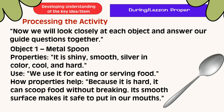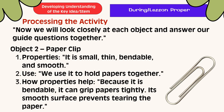Let's process the activity. We will look closely at each object and answer our guide questions together. For object number one, the metal spoon — properties: it is shiny, smooth, silver in color, cool, and hard. We can use it for eating or serving food. Because it is hard, it can scoop food without breaking. Its smooth surface makes it safe to put in our mouth. For object number two, a paper clip — properties: it is small, bendable, and smooth. We use it to hold papers together. Because it is bendable, it can grip papers tightly. Its smooth surface prevents tearing the paper.